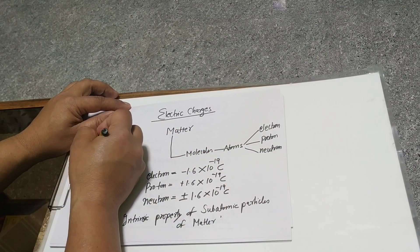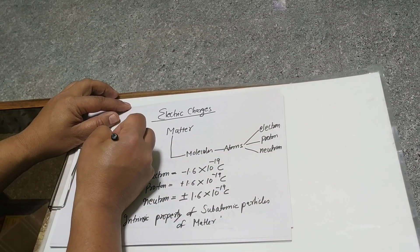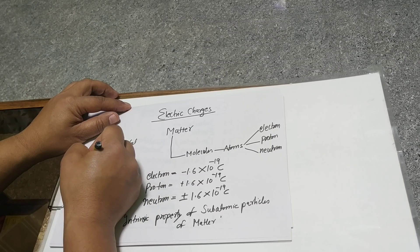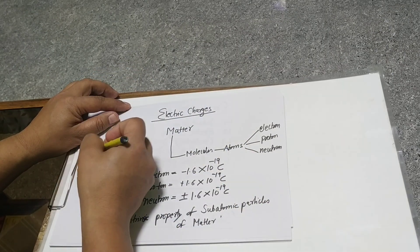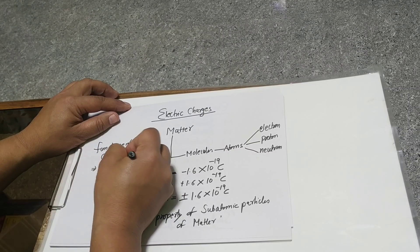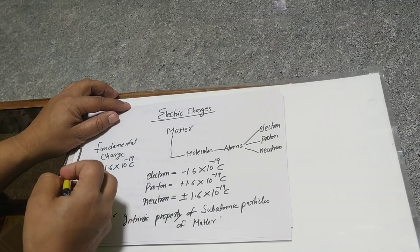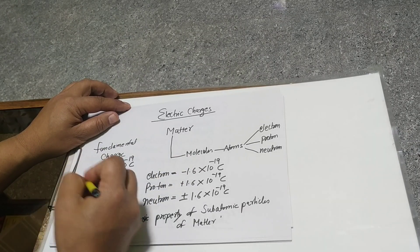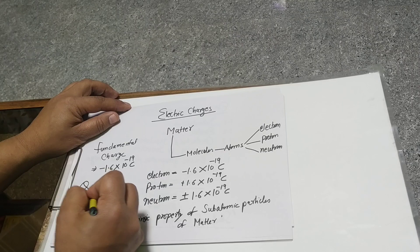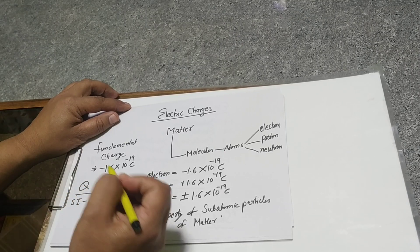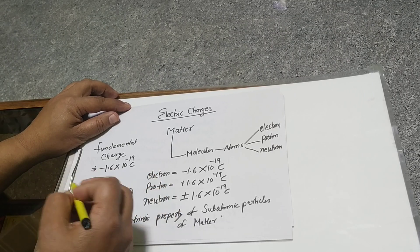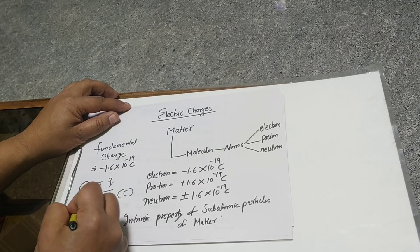Among the three, the fundamental charge is the charge of the electron. So the least charge — if the question comes, which is the least charge — the answer is the charge of the electron: minus 1.6 × 10⁻¹⁹ coulomb. Charge is represented by capital Q or small q, and the SI unit is coulomb. The coulomb was the scientist who gave electrostatic force. The CGS unit is stat coulomb.